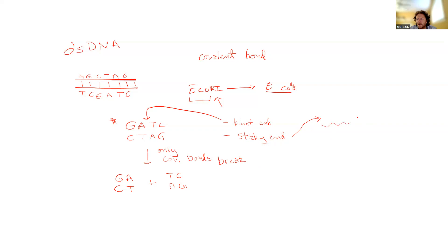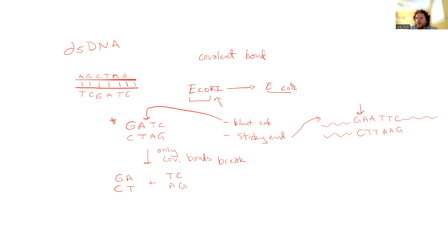Another example: let's say you have a long double-stranded piece of DNA and there's a sequence like G-A-A-T-T-C. Then the other strand, the reverse complementary sequence, is going to be C-T-T-A-A-G. Some restriction endonucleases will see that pattern and cut between the G and the A on one strand of DNA, and cut between the G and the A on the opposite strand of DNA. So you've got two cut sites — two covalent bonds broken — but these covalent bonds are not directly across from one another. They're staggered.